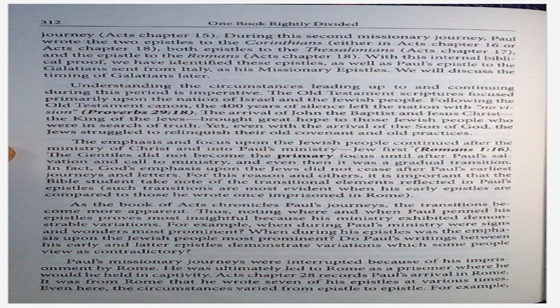Such transitions are most evident when his early epistles are compared to those he wrote once in prison in Rome. As the book of Acts chronicles Paul's journeys, the transitions become more apparent, thus noting where and when Paul penned his epistles proves most insightful because his ministry exhibited demonstrable variations.